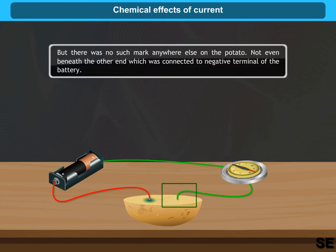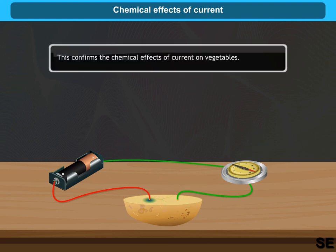But there was no such mark anywhere else on the potato, not even beneath the other end which was connected to the negative terminal of the battery. This confirms the chemical effects of current on vegetables.